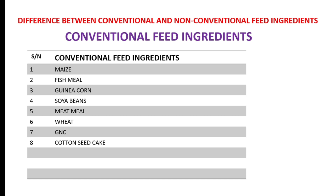Looking at the economic crisis, it has impacted negatively on the profitability of fish farming, especially in Nigeria and some African countries, and farmers now have no option but to resort to using non-conventional feed ingredients. Here is the list of the conventional feed ingredients.